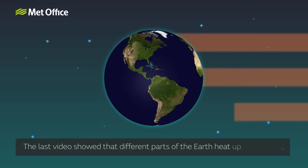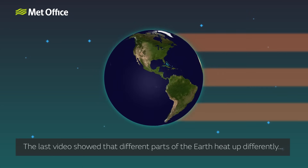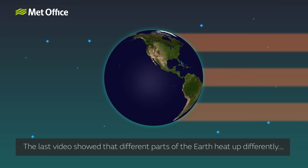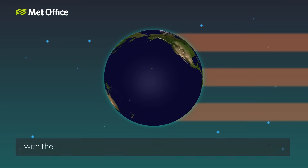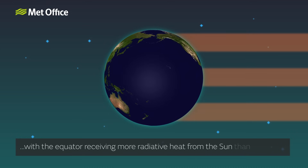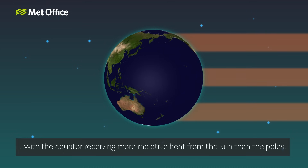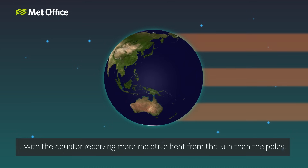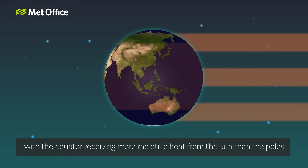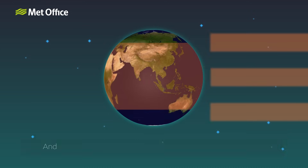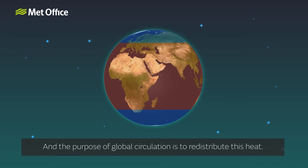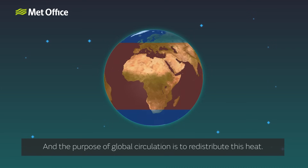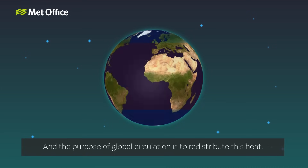The last video showed that different parts of the Earth heat up differently, with the equator receiving more radiative heat from the Sun than the poles. The purpose of global circulation is to redistribute this heat.